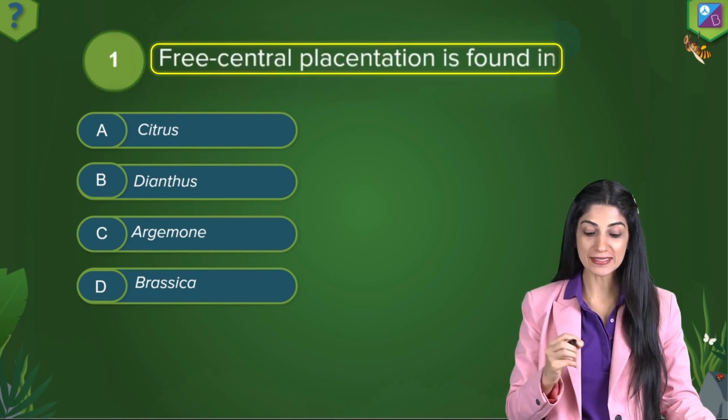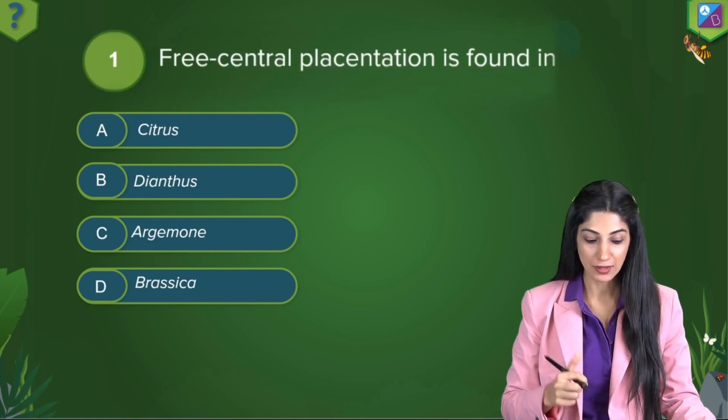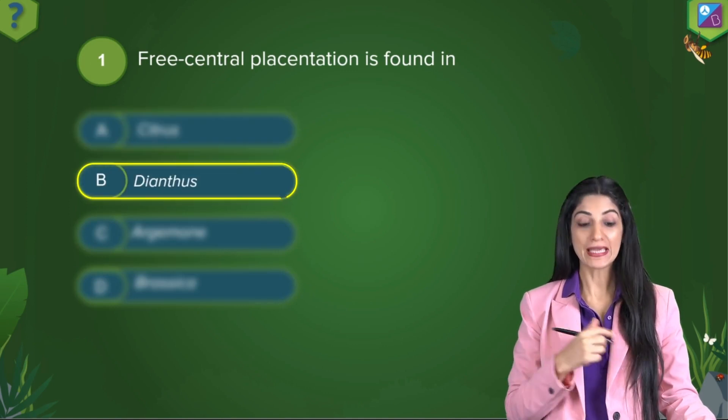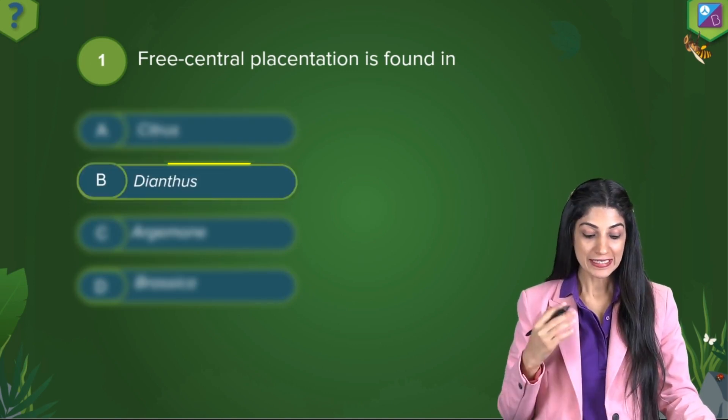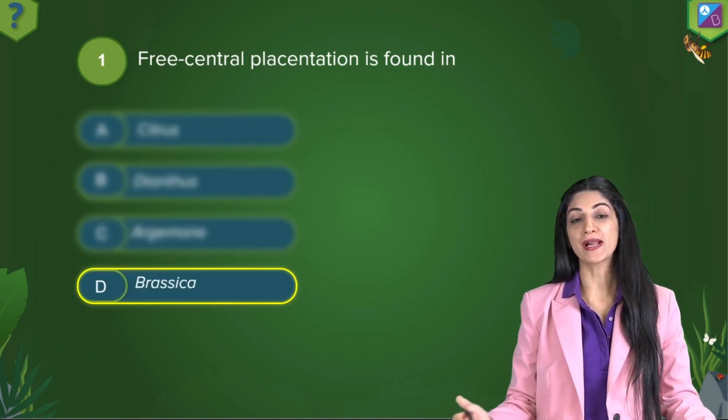The free central placentation is found in: A. Citrus, B. Dianthus, C. Argemone, and D. Brassica.